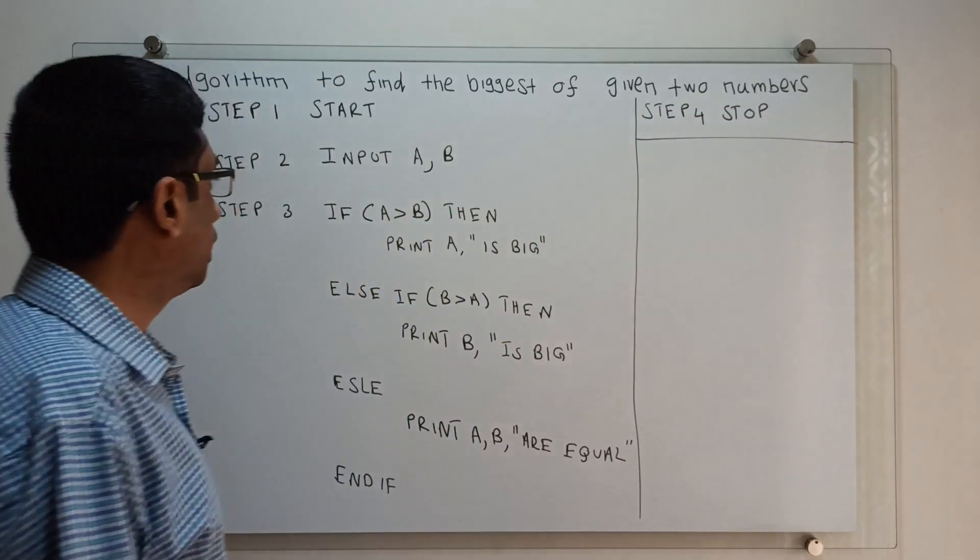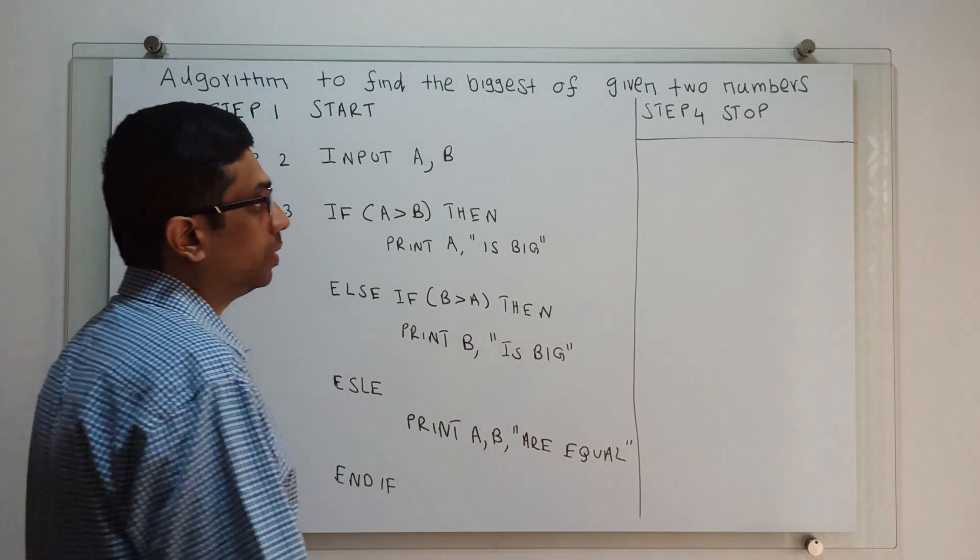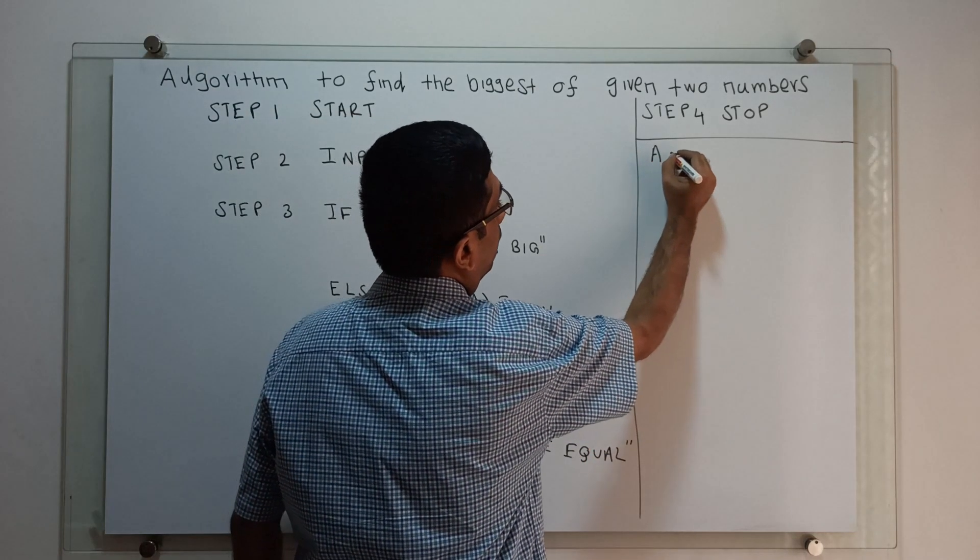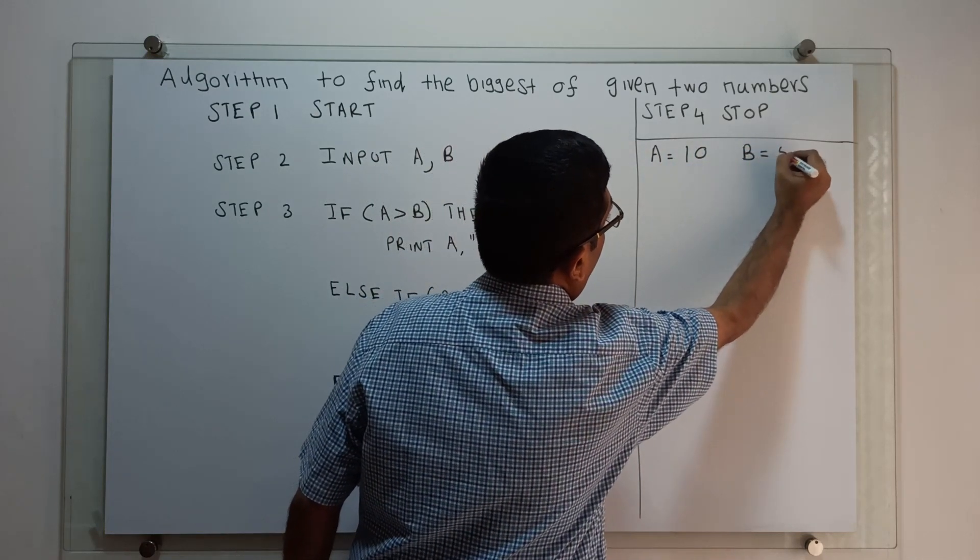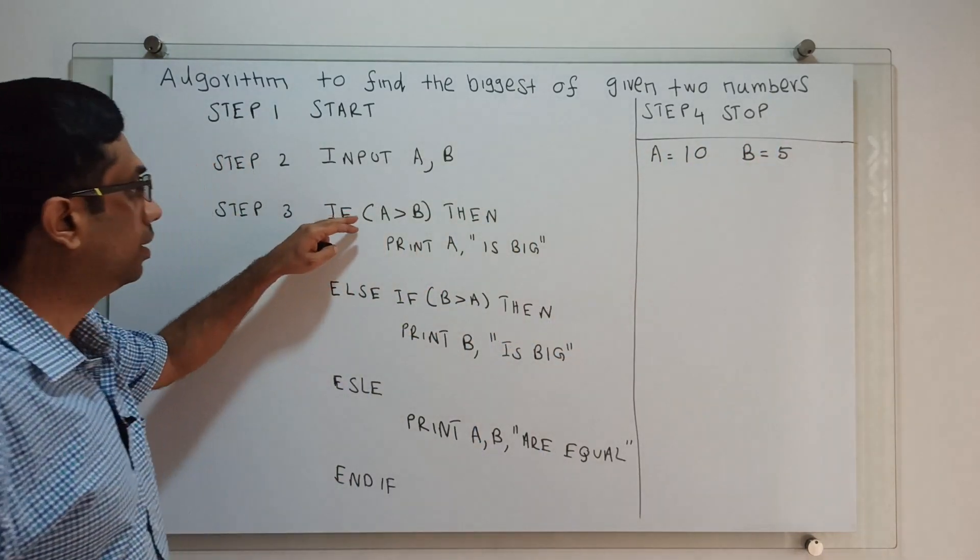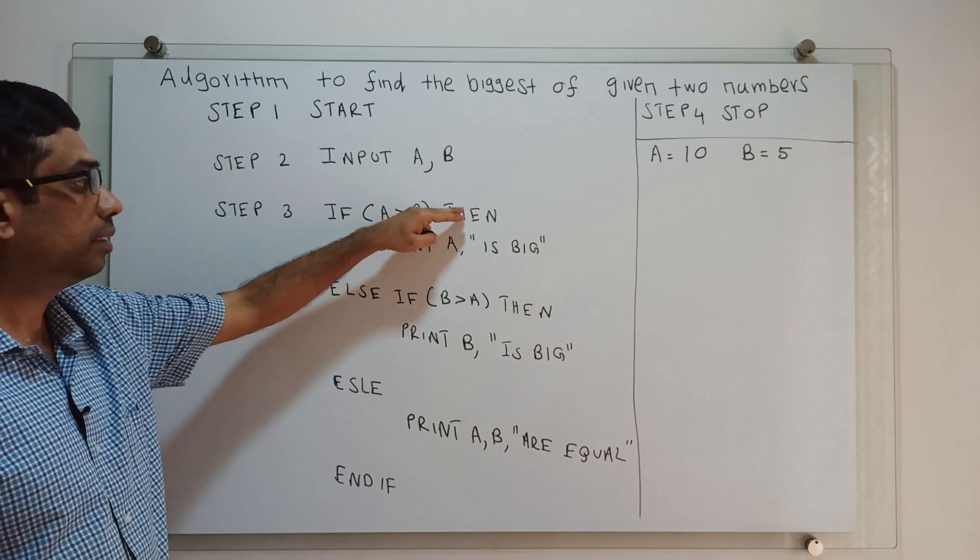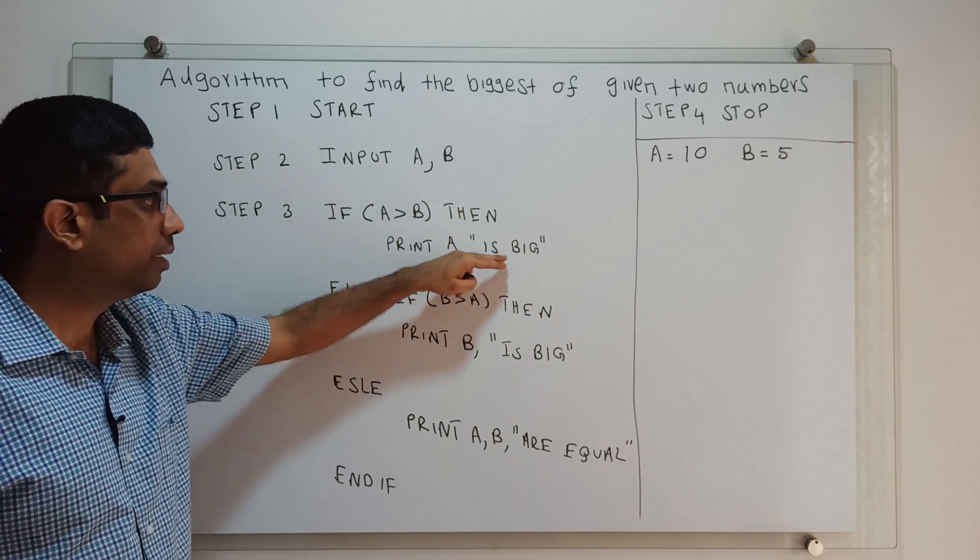Now we will check how the algorithm works. For example, I am giving A equal to 10, B equal to 5. We will check if A greater than B. The condition is true, then we print 'A is big'.